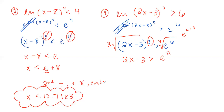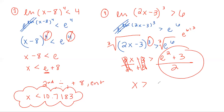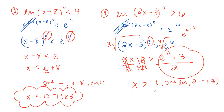Leave it as e squared for now — don't type in e to get a decimal until the very last step. Then add 3 to both sides and divide by 2. To type this in the calculator: put parentheses, press 2nd LN to get e to the x, type 2 for the exponent, tab over, type plus 3, close parentheses, then divide by 2. You should get that x is greater than 5.1945.